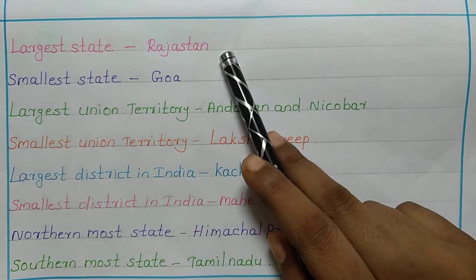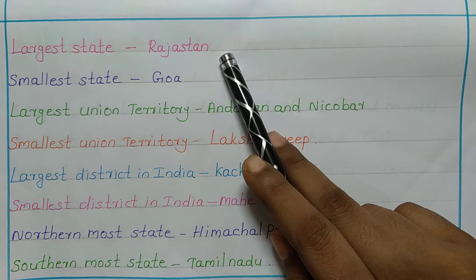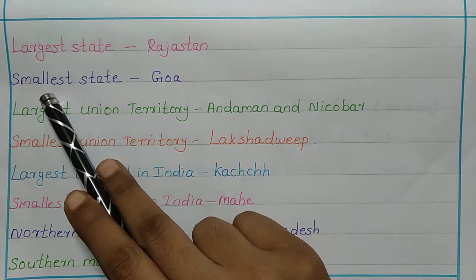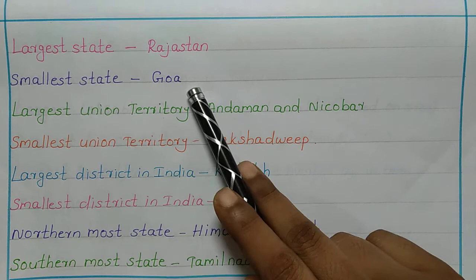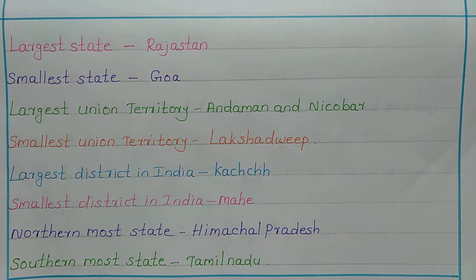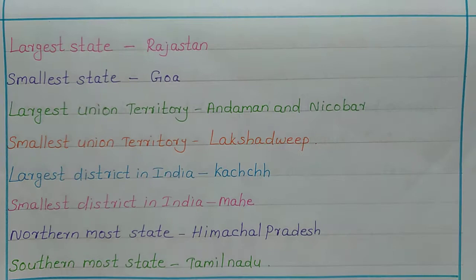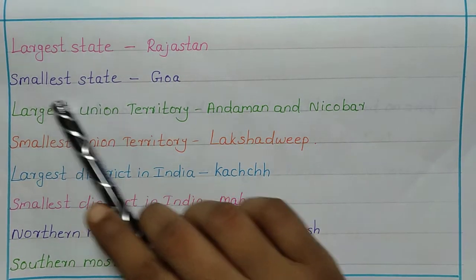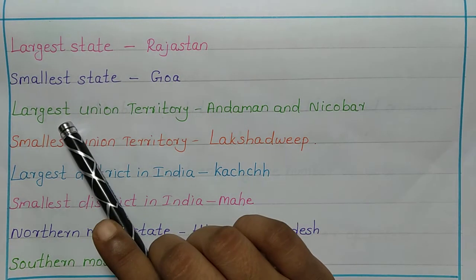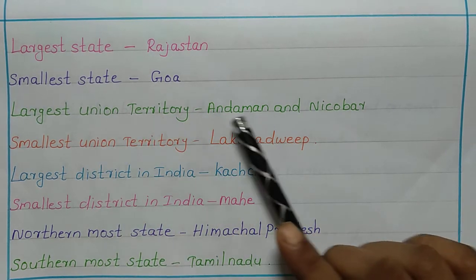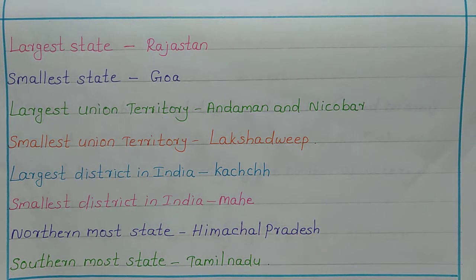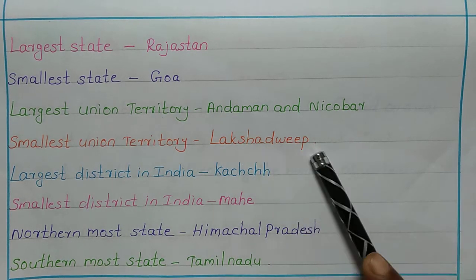The largest state of India is Rajasthan, and the smallest state is Goa. The largest Union Territory is Andaman and Nicobar, and the smallest Union Territory is Lakshadweep.